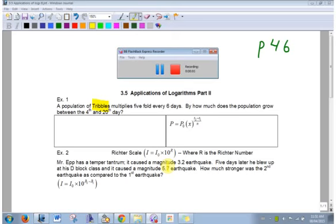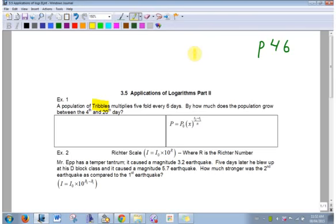So, like yesterday, just four examples. Quiz on this stuff Friday, but not tomorrow's stuff, okay? So, a population of tribbles multiplies five-fold every six days. How much does the population grow between the fourth and the 20th day? That's a little different.